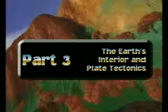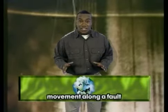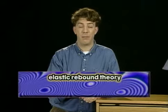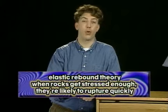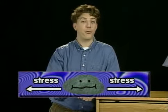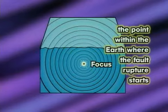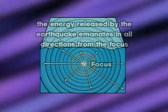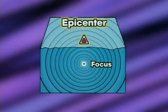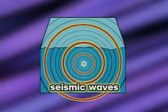Part 3: The Earth's Interior and Plate Tectonics, Section A: Seismology and the Earth's Interior. When the Earth cuts loose with a big release of energy, like movement along a fault, it can cause an earthquake. According to the Elastic Rebound Theory, when rocks get stressed enough, they're likely to rupture quickly, like a rubber band breaking. The energy released from the rupture moves outward in waves from the rupture site. The point within the Earth where the fault rupture starts is called the focus of the earthquake. The epicenter is the point on the Earth's surface directly above the focus. The energy waves released by the quake are called seismic waves, which come in different types and sizes.